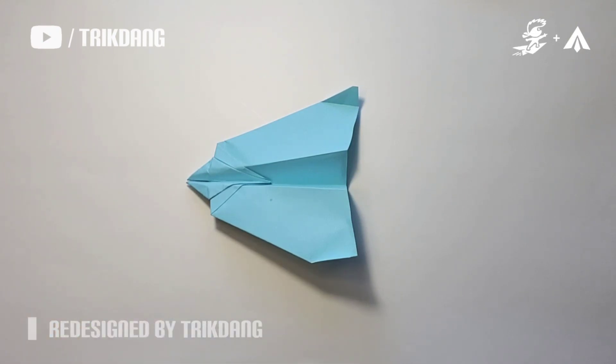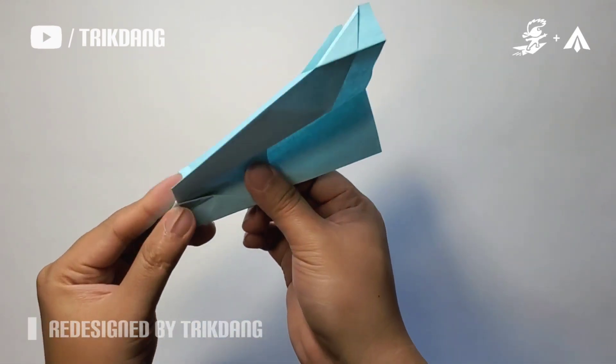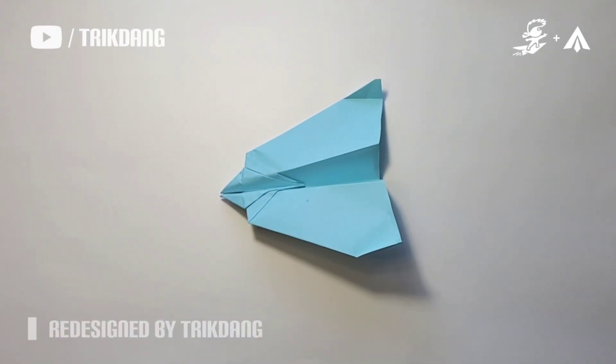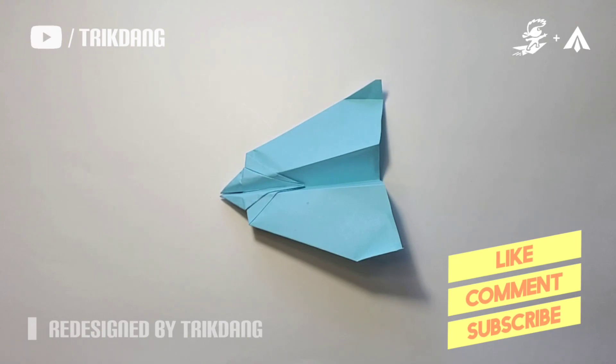When you throw it straight up high, it will glide for a long distance. And you throw it straight far, it flies very, very far and it will not crash right away. Even if you throw it and it doesn't fly straight, it will just glide slowly and then land on the ground perfectly.